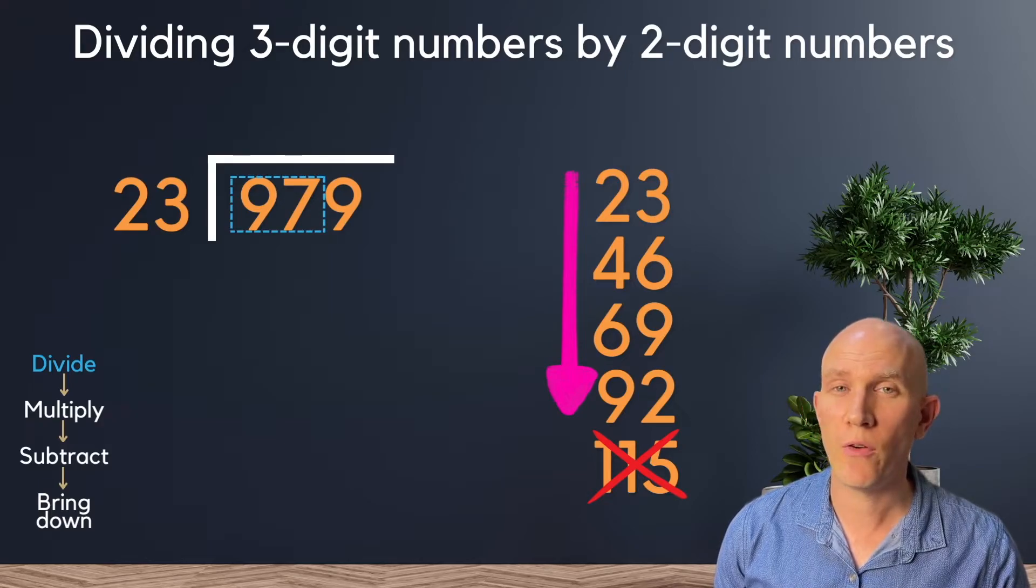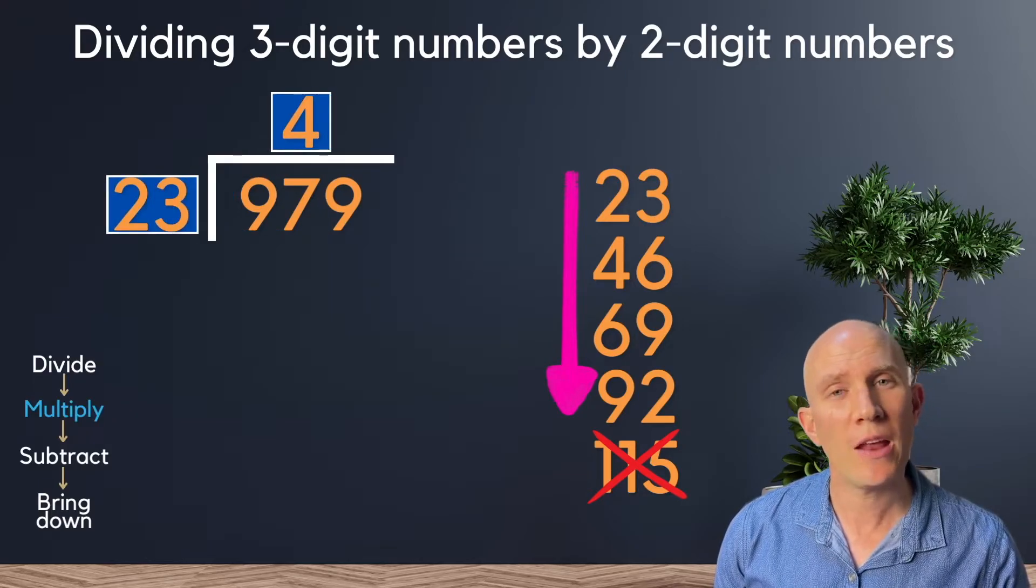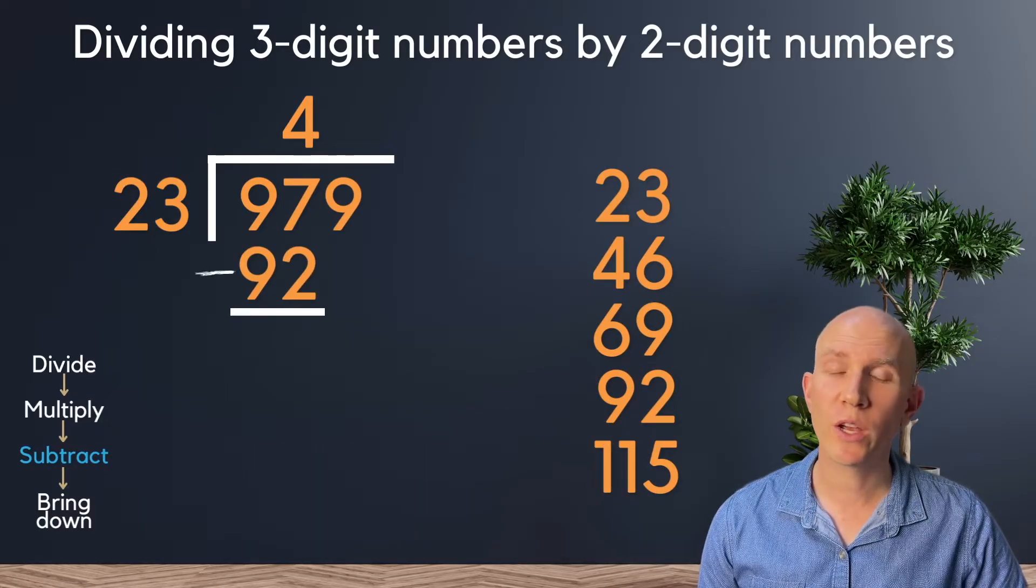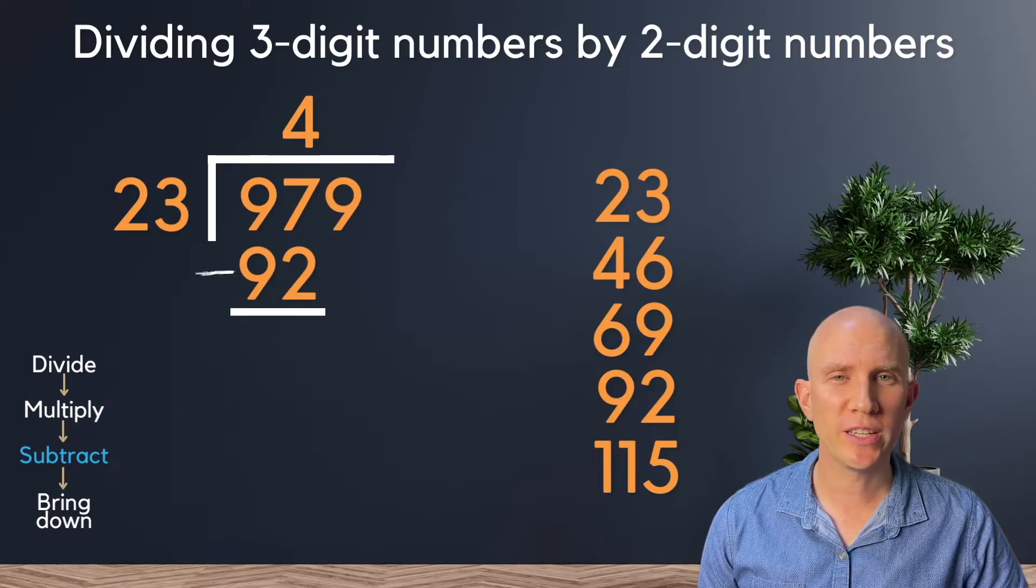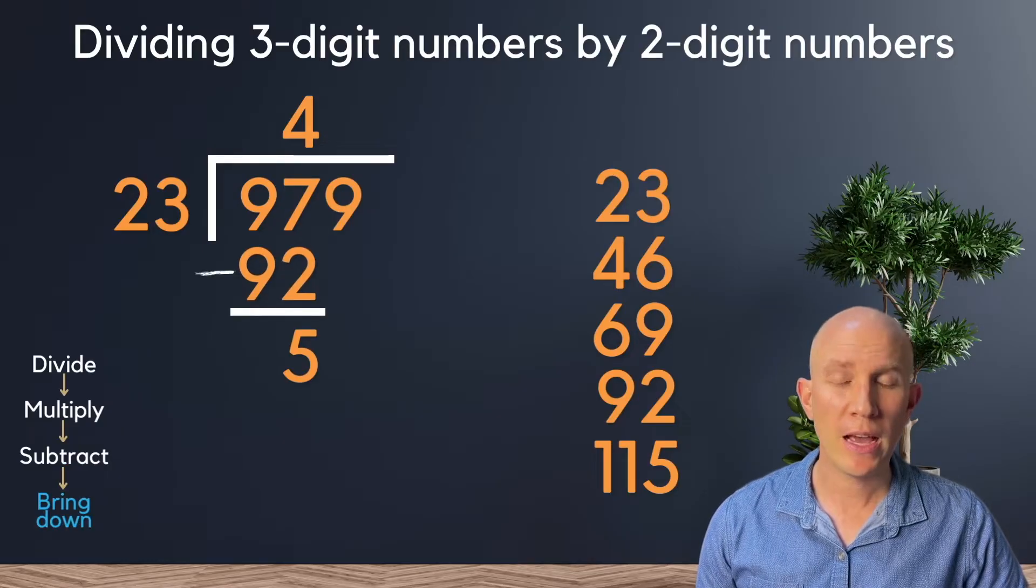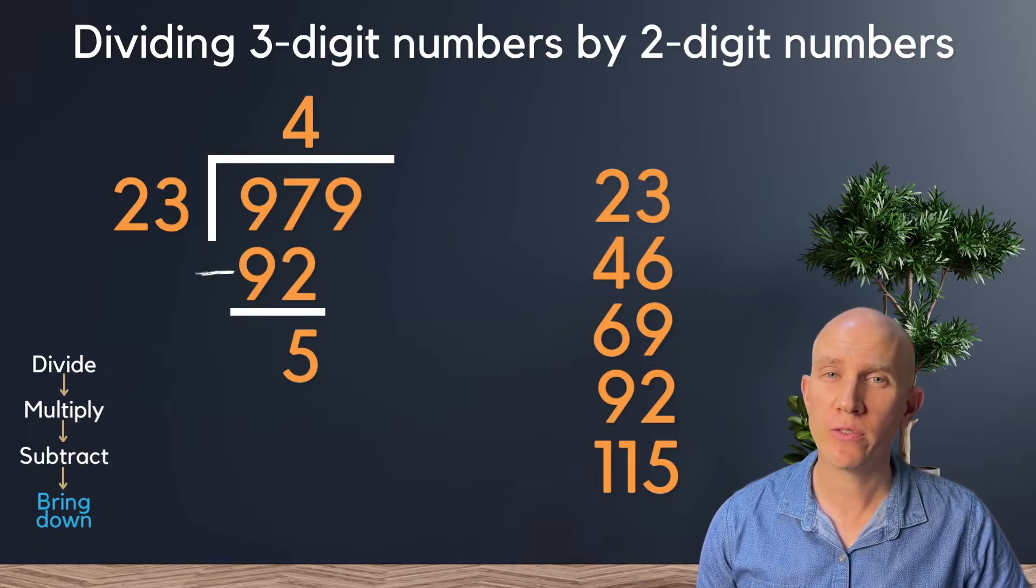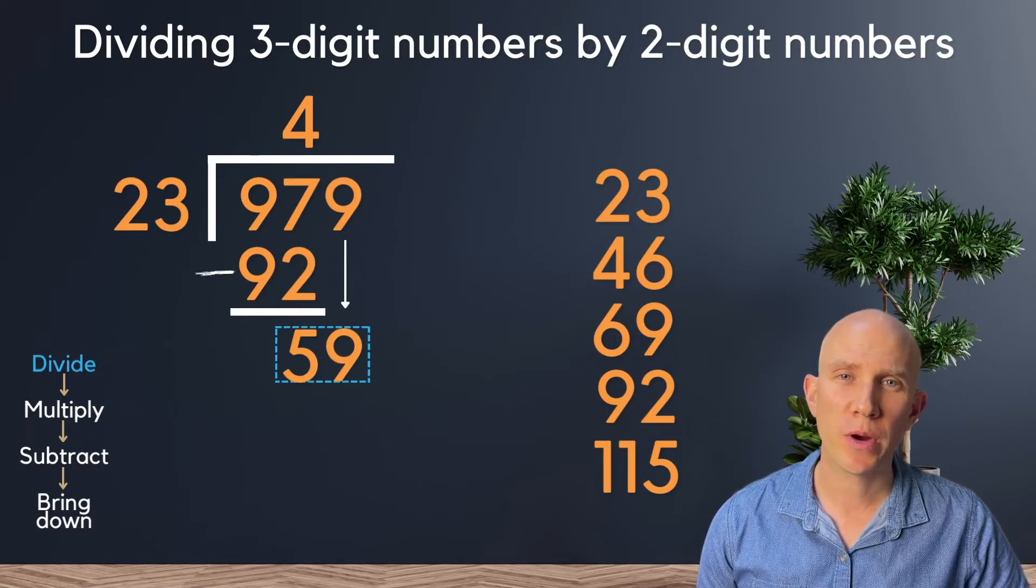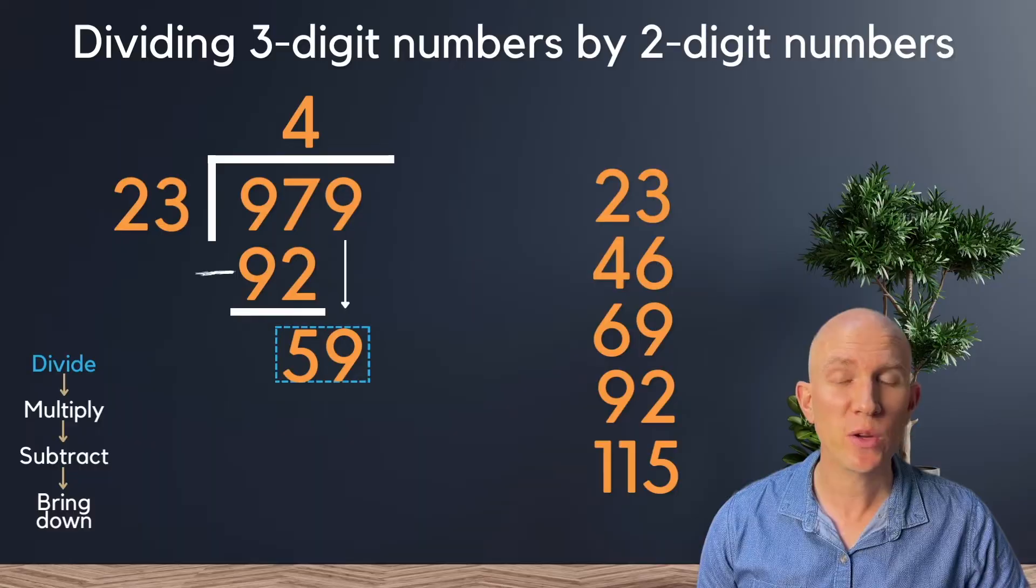And we can see that it goes in four times. And four times 23 is 92, which we'll take away from 97, resulting in five. Now, once again, 23 can't go into five. So we'll bring down reinforcements. And after bringing that down, we're going to start our process all over again and start back at division.